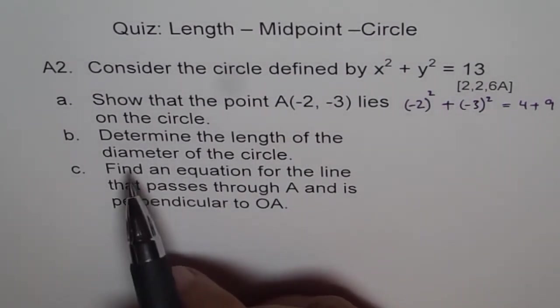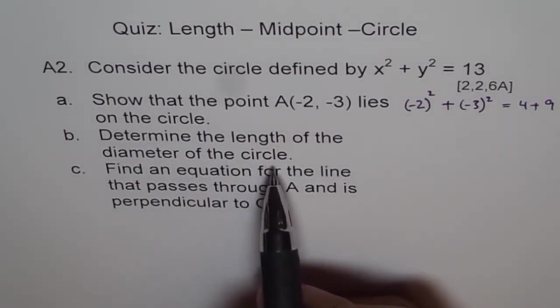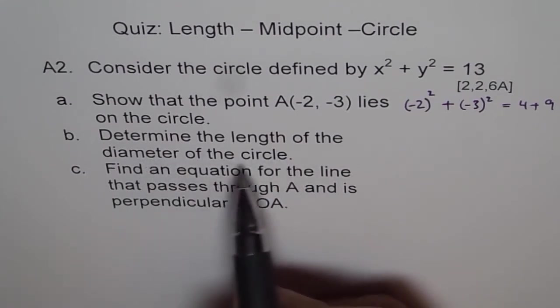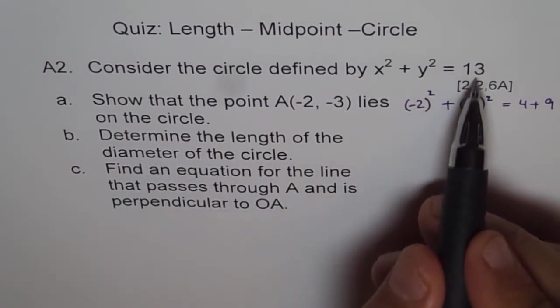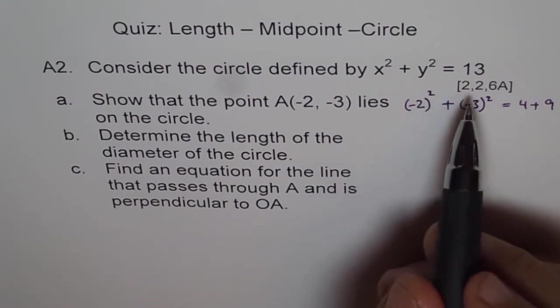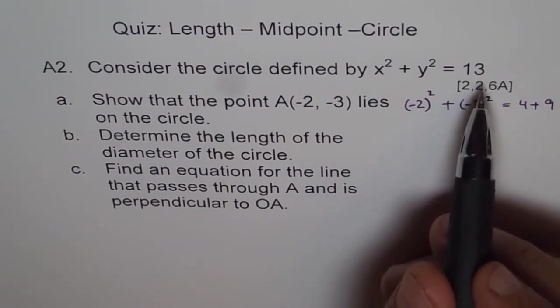Determine the length of diameter of the circle. Diameter should be twice radius. And how much is the radius? Radius is not 13. Radius is square root of 13.